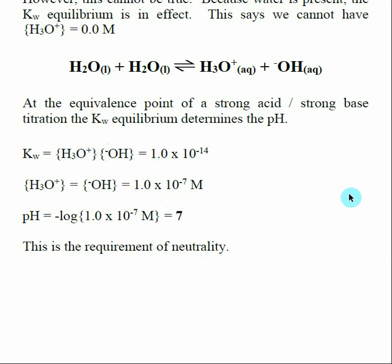This is our definition of neutrality — pH equals 7. At the equivalence point of a strong acid strong base titration there are really no calculations needed to determine the pH; once you recognize you're at the equivalence point, you know the pH is 7. This is true for any strong acid strong base titration when moles of acid equal moles of base. For a weak acid strong base titration, however, this is not true — at the equivalence point the pH will be greater than 7, which is one of the key differences between these two types of titrations.